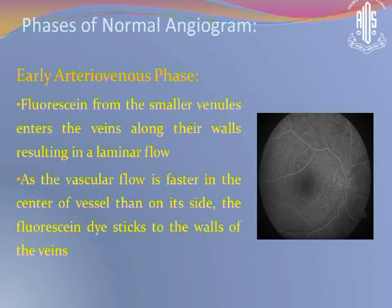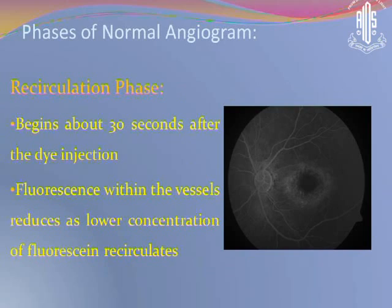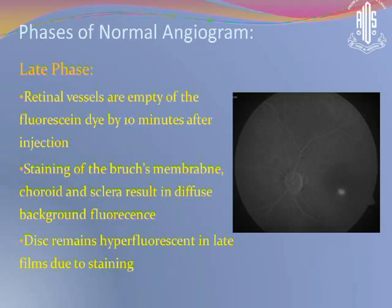As the whole venous structures fill up, the laminar flow is lost. The perifoveal capillary network is best visualized at about 20 to 25 seconds after injection of the dye. The fovea appears hypofluorescent because of the absence of blood vessels in the foveal avascular zone, and also due to blockage of background choroidal fluorescence by the tall RPE cells. Then comes the recirculation phase, about 30 seconds after the dye injection, and fluorescence within the vessels starts to reduce, with a lower concentration of fluorescence recirculating. In the late phases, the retinal vessels empty by about 10 minutes. Staining of Bruch's membrane, choroid, and sclera results from diffuse background fluorescence, and the disc remains hyperfluorescent even in the late films due to staining.